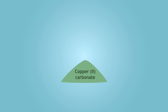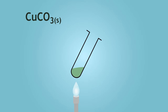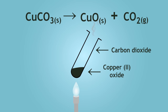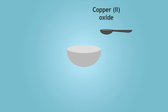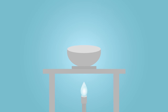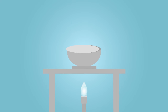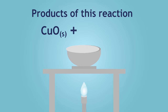Copper(II) carbonate is a green solid that thermally decomposes to form copper(II) oxide and carbon dioxide upon heating. Copper(II) oxide is a black powder. We can actually extract copper metal from copper(II) oxide. Place three spoonfuls of copper(II) oxide in a crucible and one spoonful of charcoal, which is essentially carbon. Heat this using a Bunsen burner with the crucible lid slightly ajar for approximately five minutes. Predict the products of this single displacement reaction.